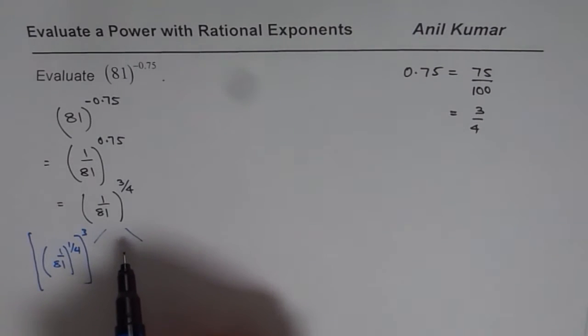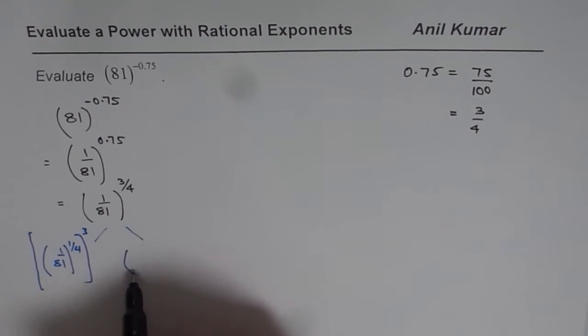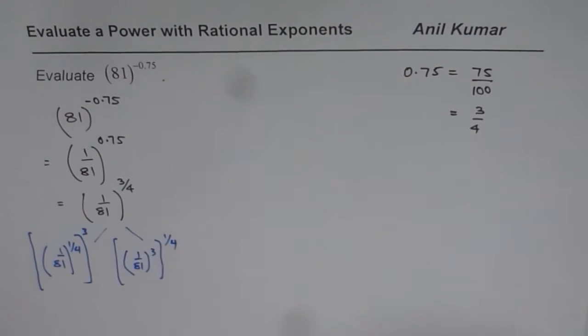The second choice could be, you could first find cube of the number, and then find the fourth root. Both are correct. So you could follow any method to further solve it.